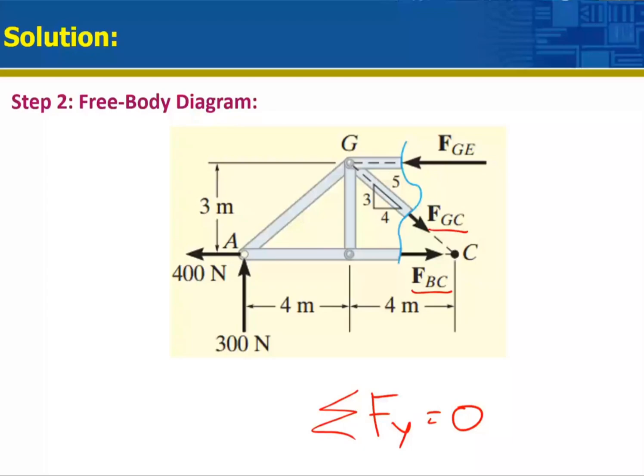Also, if I take moment, next thing I will do is to take moment at point C. If I take moment at point C, this does not appear in the equation, will not appear in the equation, will not appear in the equation. So the only thing will appear is this force into distance and this force into distance. So I will be able to easily find the value of this. Am I right?